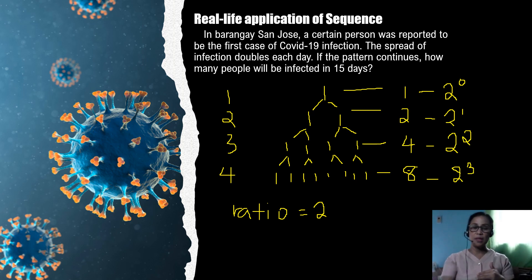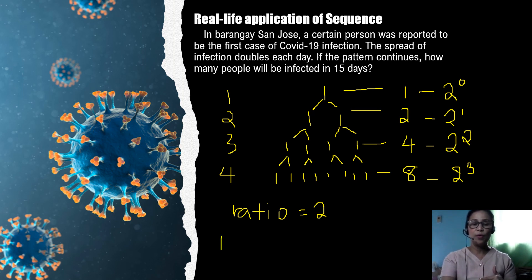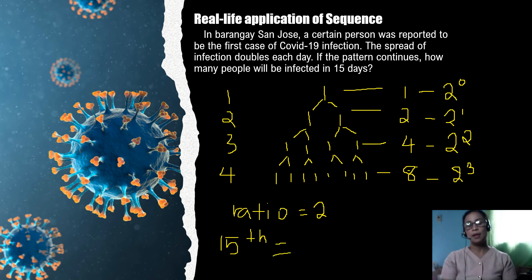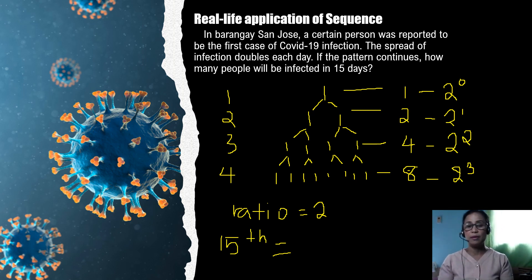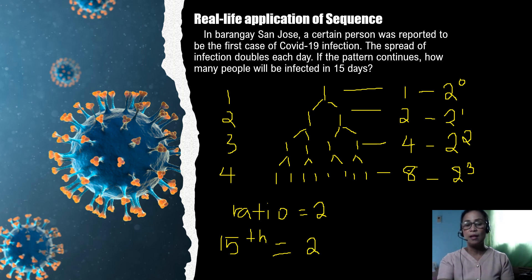Since the problem asks how many people will be infected in 15 days, we are solving for the 15th day total, or the 15th term. To solve this practically, we observe the pattern of the exponent compared to the days. On the first day, the exponent is zero; second day, one; third day, two; fourth day, three. Therefore, on the 15th day, the exponent of two would be 14.